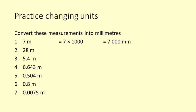7 metres. 7 times 1000 equals 7000 millimetres. 28 metres. 28 times 1000 equals 28,000 millimetres.